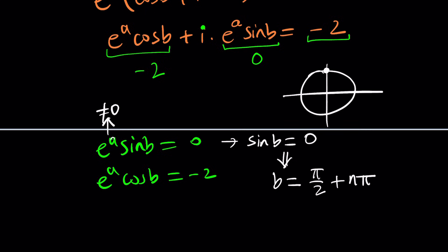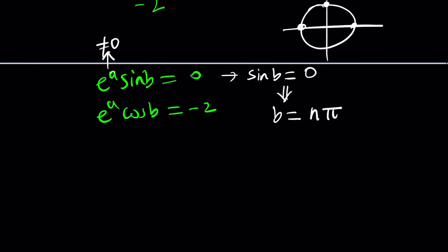That's not, that's wrong. Sine is zero at zero and pi. Never mind. I meant multiples of pi. No, not plus pi over 2. So yes, b needs to be a multiple of pi. Could be odd or even. But let's look at the second equation. What does that tell us?